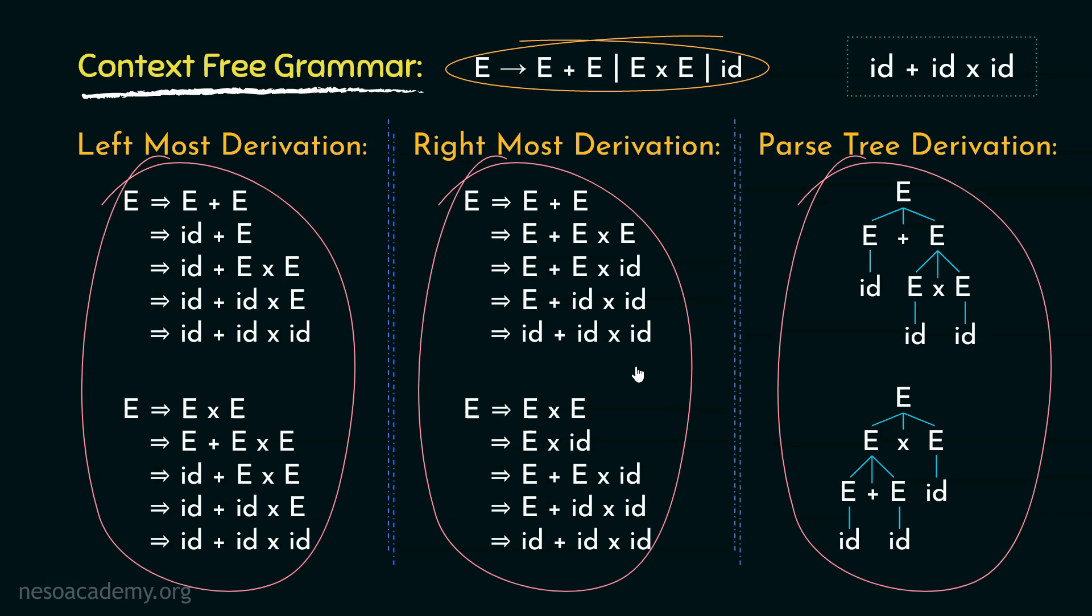Anyway, do always remember that for any grammar, if there remains more than one leftmost derivations or more than one rightmost derivations or more than one parse tree, then the grammar is ambiguous.